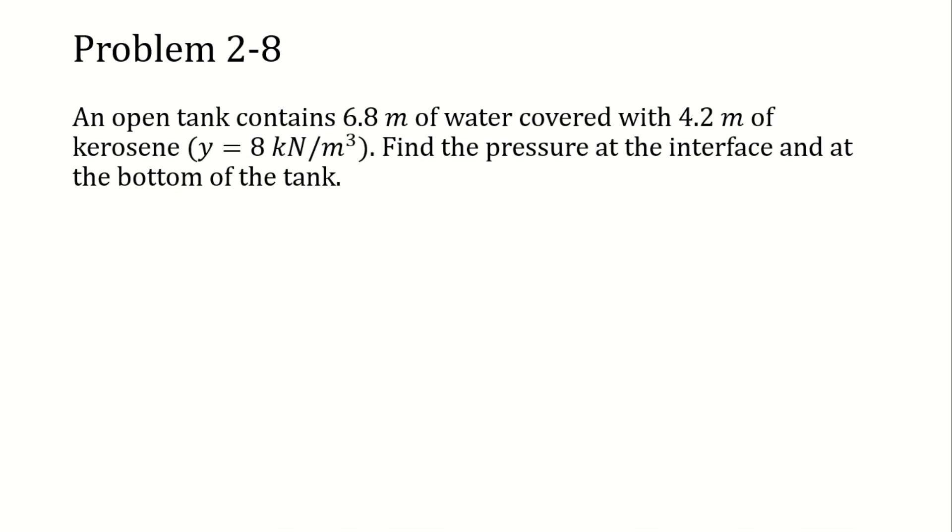An open tank contains 6.8 m of water covered with 4.2 m of kerosene which has a unit weight of 8 kN per cubic meter. Find the pressure at the interface and at the bottom of the tank.